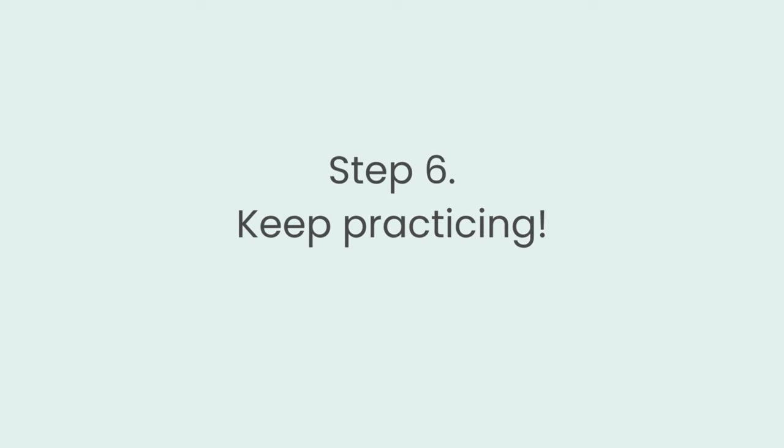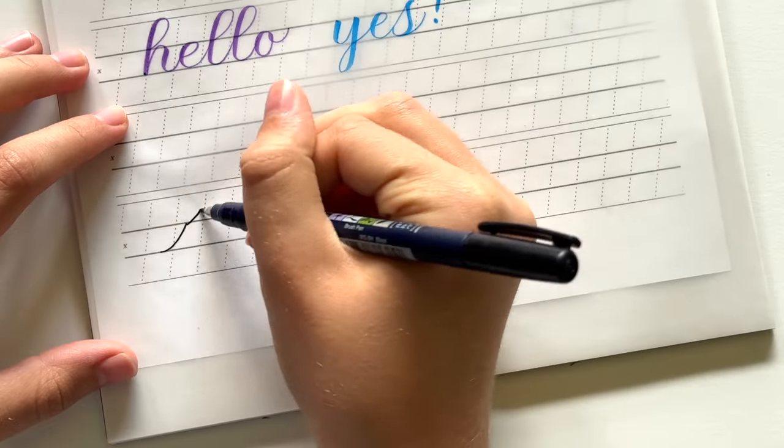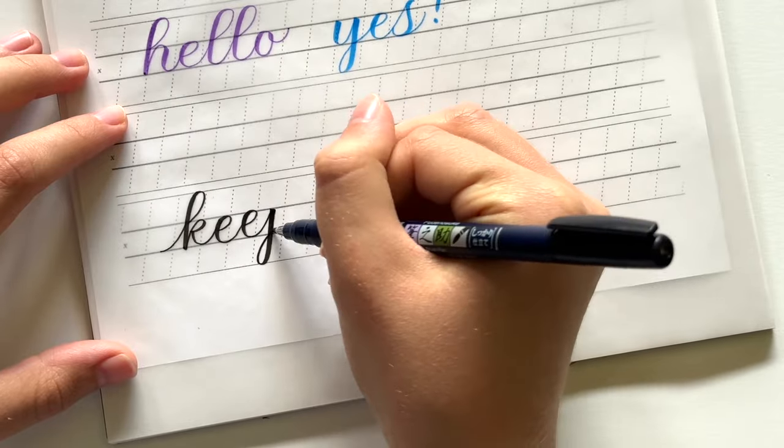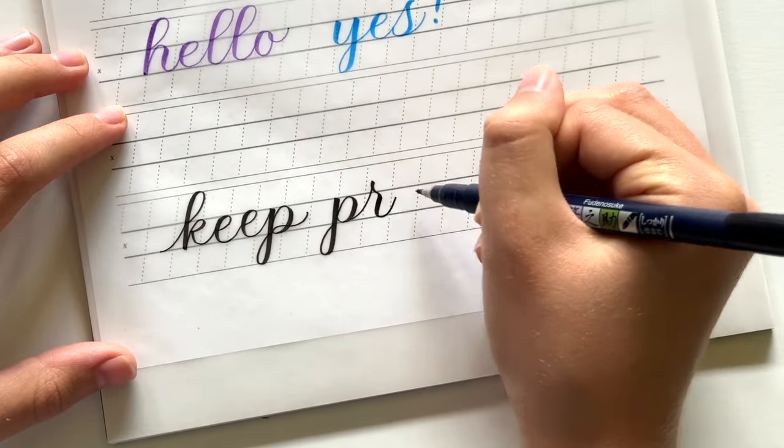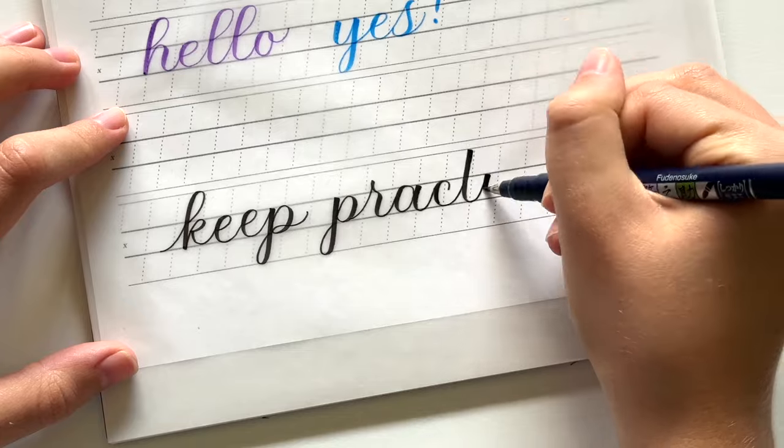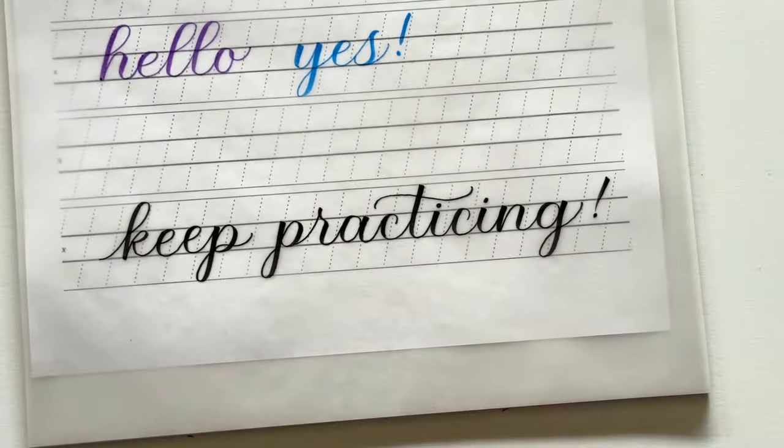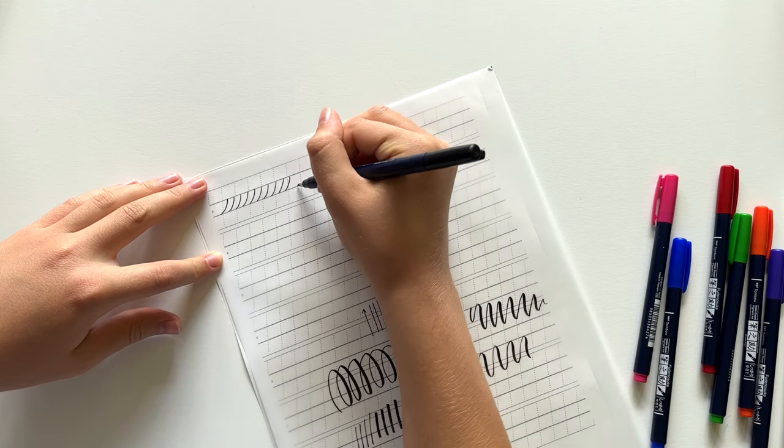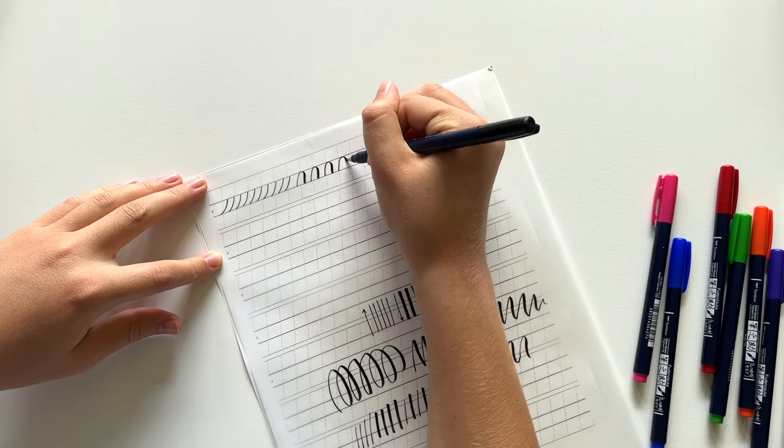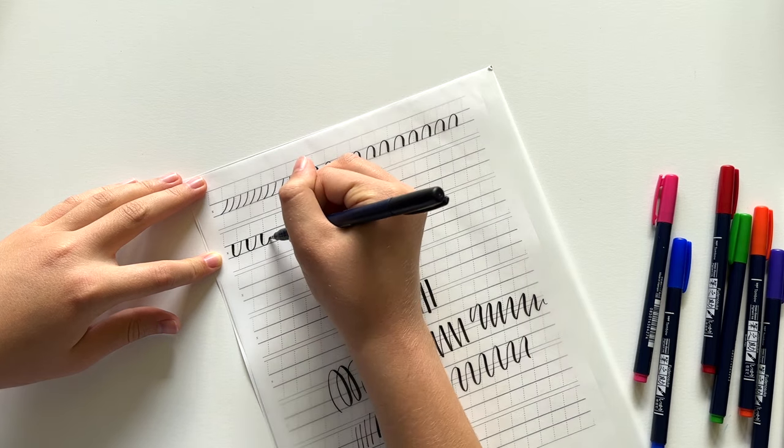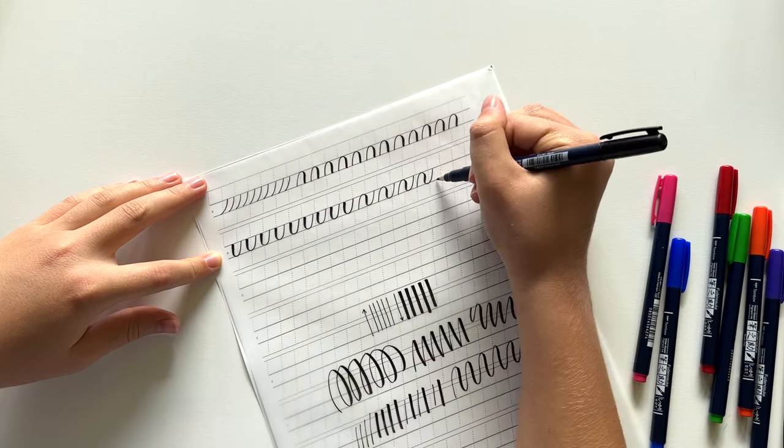Now the next step is what nobody really wants to hear which is keep practicing. But practice does not have to be boring. It can actually be really relaxing. So what exactly should you be practicing? First of all if you're just getting started you need to focus on practicing the basic strokes and just filling pages with those until you feel really comfortable with those.